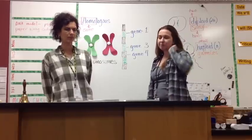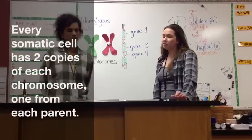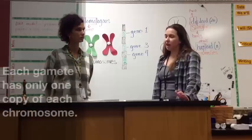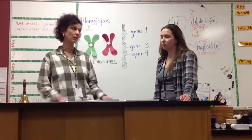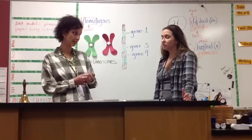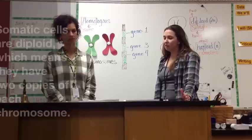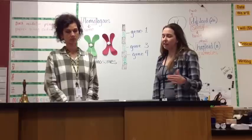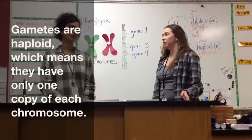What makes these cells different from each other when we talk about chromosomes? Every somatic cell has two copies of each chromosome, one from each parent. But gametes have only one copy of each chromosome. So in humans, gametes only have 23 chromosomes, but somatic cells have 46 chromosomes. Somatic cells are diploid, which means they have two copies of each chromosome, while gametes are haploid, which means they only have one copy of each chromosome.